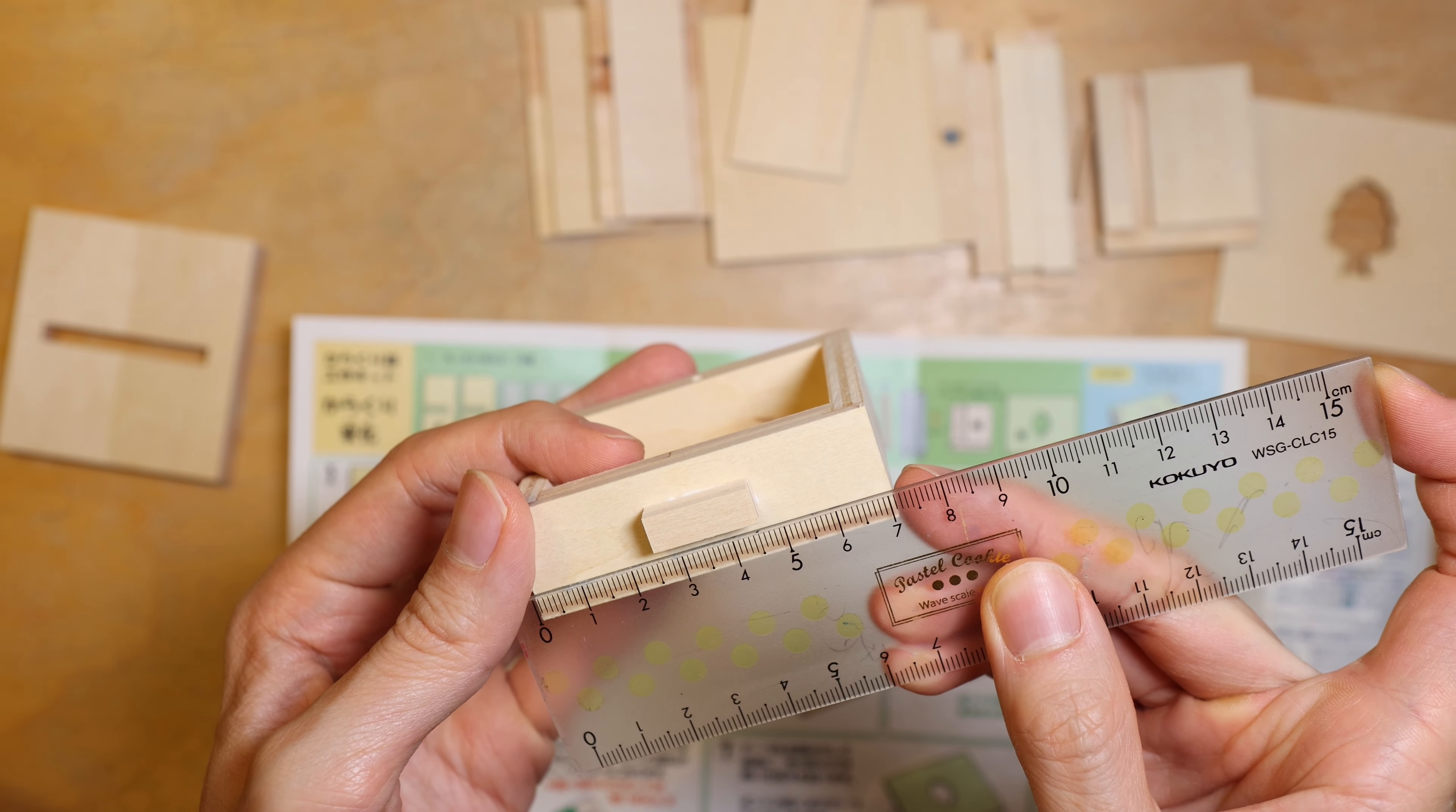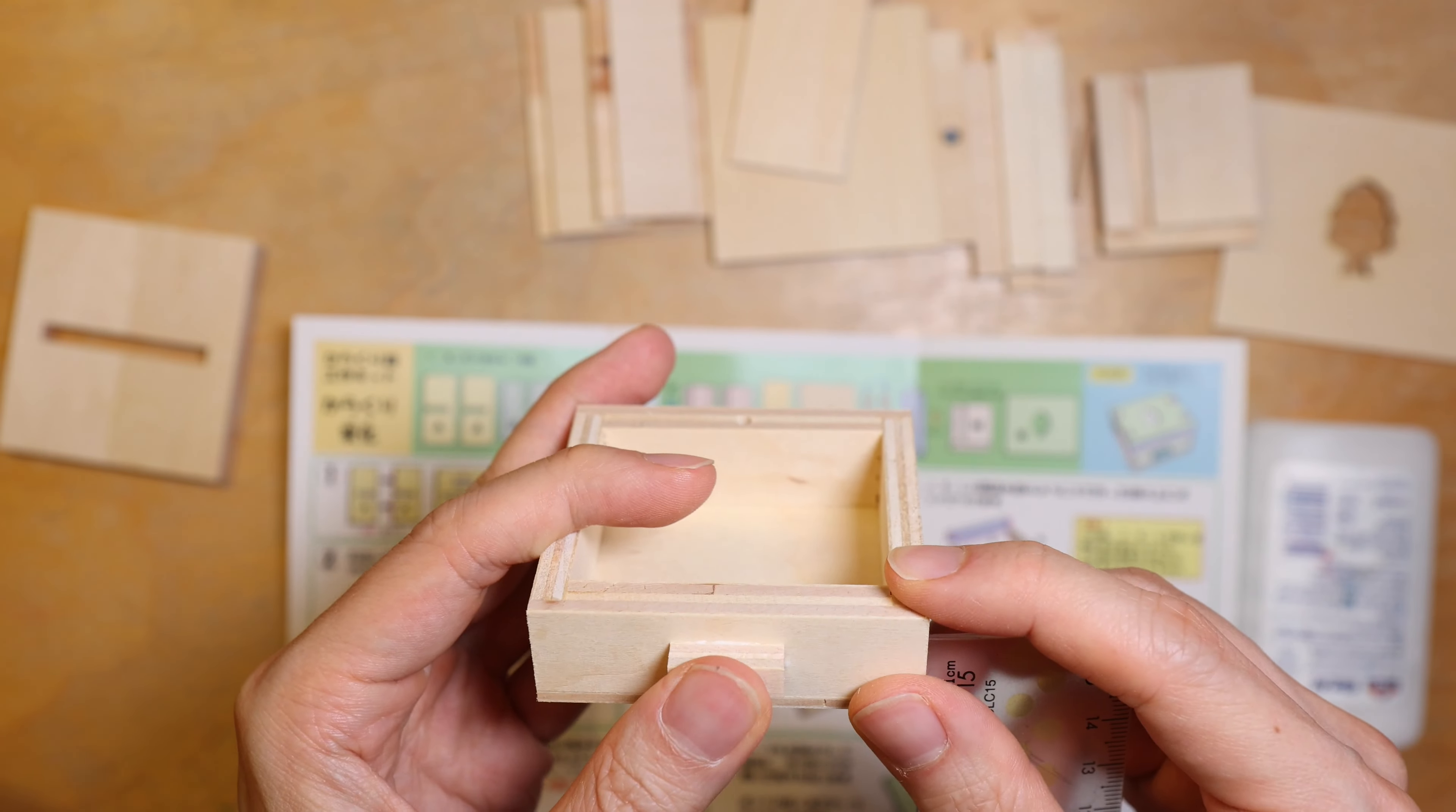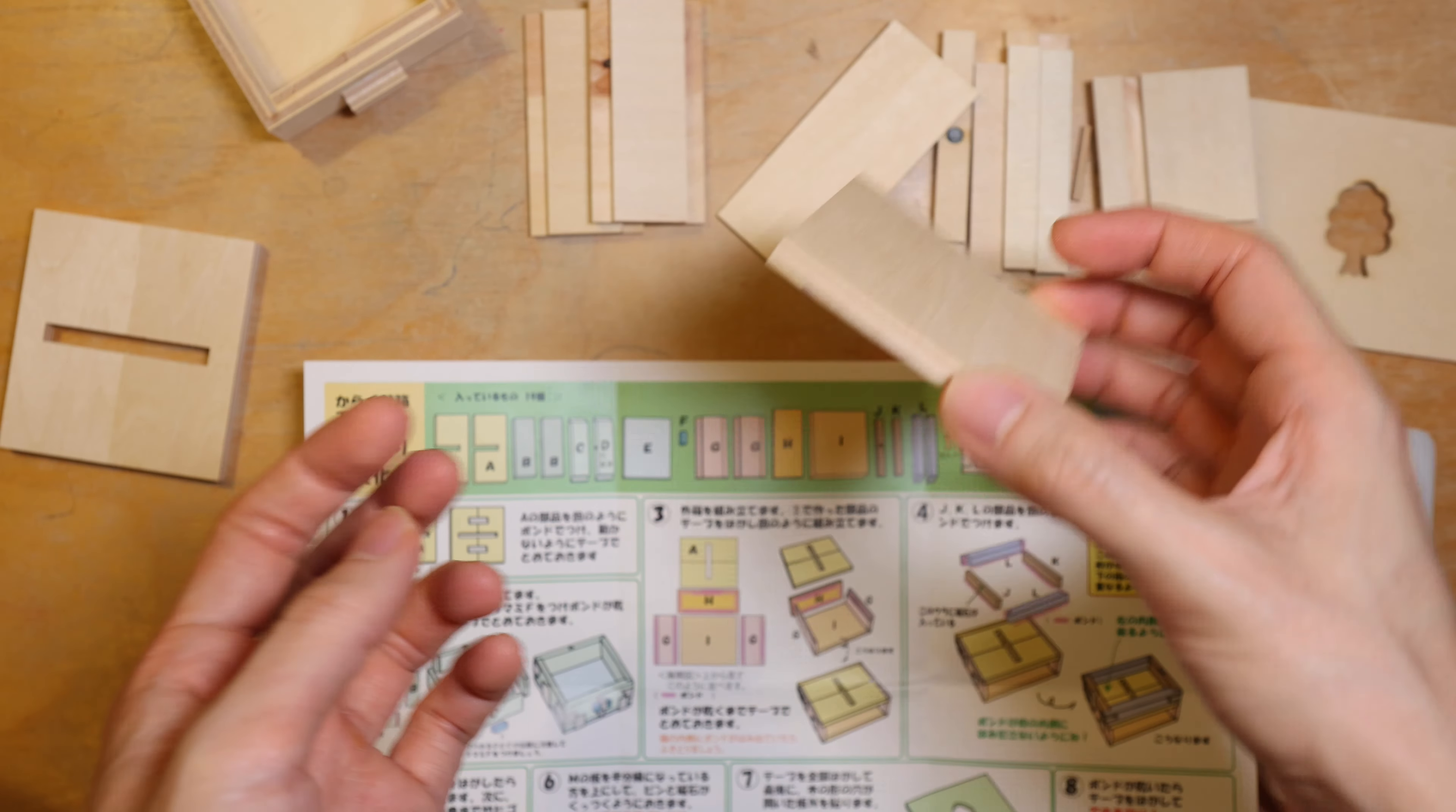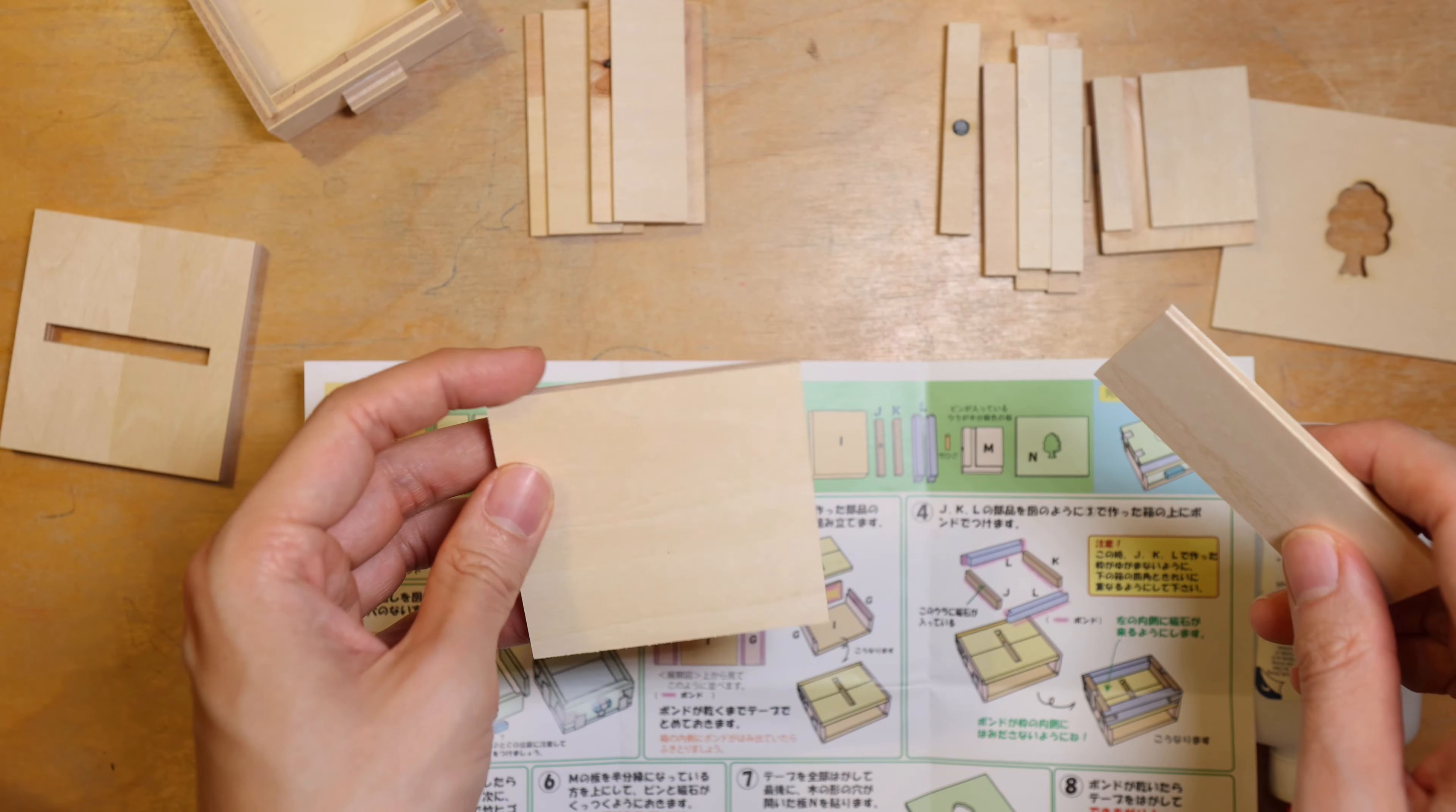Before the glue is dry, I quickly took my daughter's ruler, which is lying around, and measured the handle placement, to make sure I can get as close to perfect as I can. It's done, and I will put this aside to let the glue dry, and let's move on to the next step, which is the outer shell.